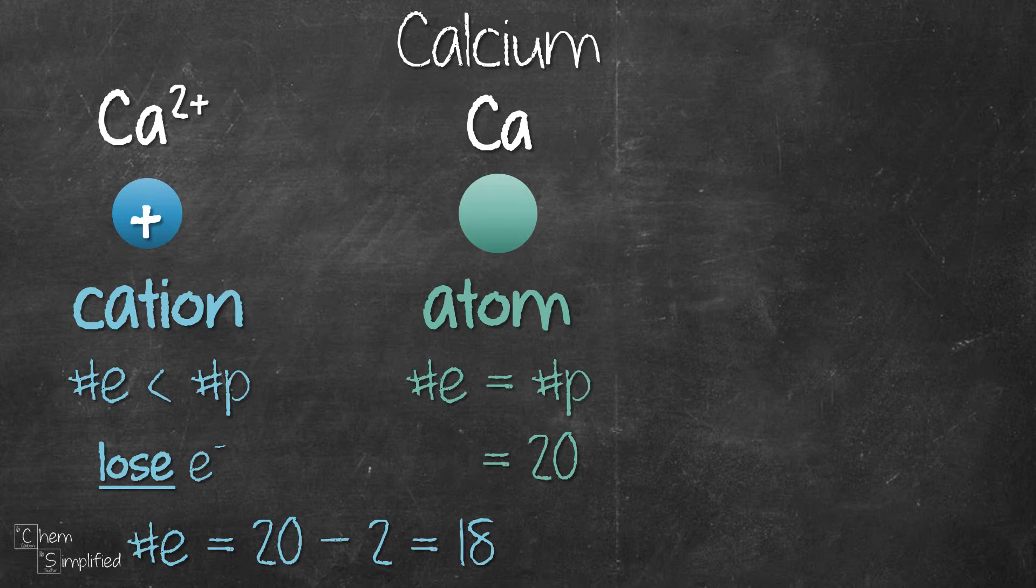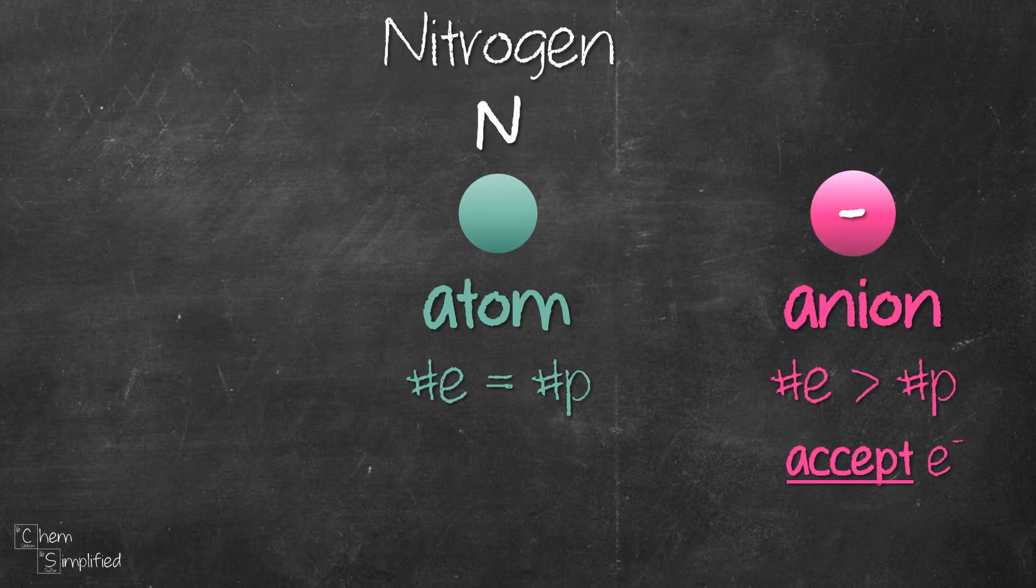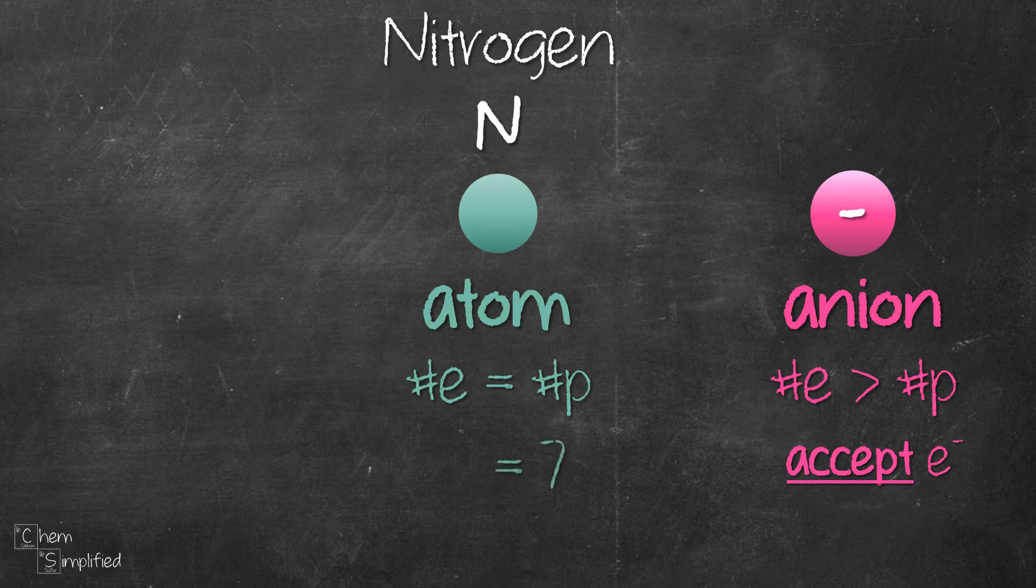Now let's try another example: nitrogen. For the atom, nitrogen has an atomic number of 7, so that means the number of electrons is also 7.